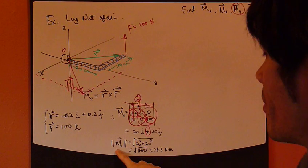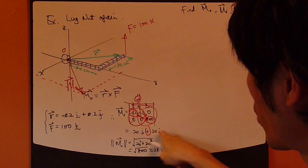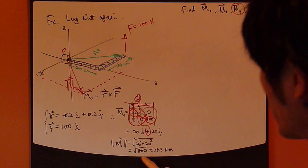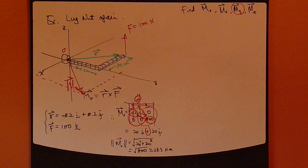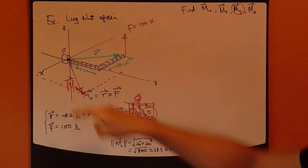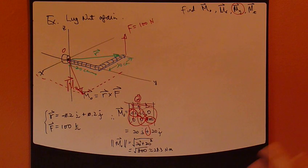Okay? So, I can calculate the magnitude of the M_O easily. Alright? Just take the square of the component and then take square root. So, about 28.3 Newton meters. Okay? So, we've established that. I'm going to use that just for reference.